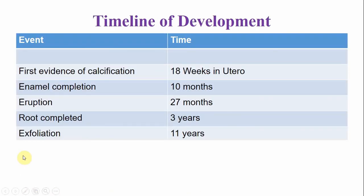So the timeline of development. The mandibular deciduous second molar — calcification of this tooth begins around the age of 18 weeks. The crown is completed when the baby is 10 months old. The tooth emerges into the oral cavity by the age of 27 months. The root is completed by the age of 3 years, and the tooth is replaced by exfoliation around the age of 11 to 12 years, when the mandibular second premolar emerges into the oral cavity.